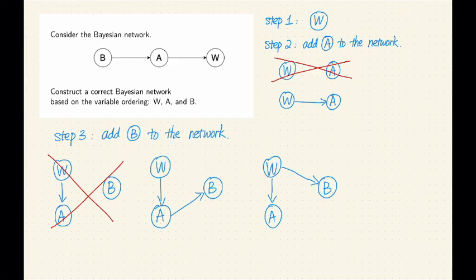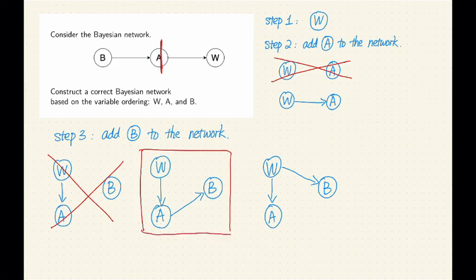So looking at the original network, the answer is yes. Given the original network, we already know that knowing the value of A, this chain is cut off, so B and W are independent. So given A, B is indeed independent from W, which means this is the correct one.